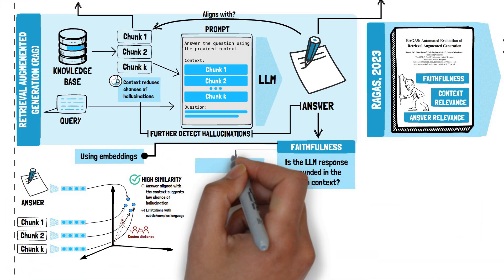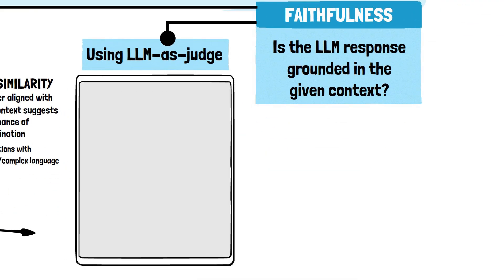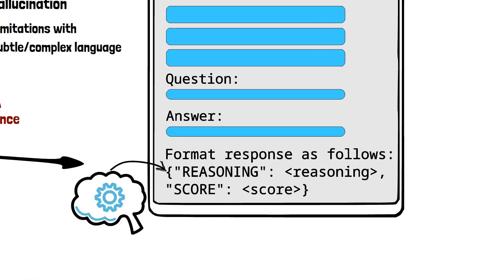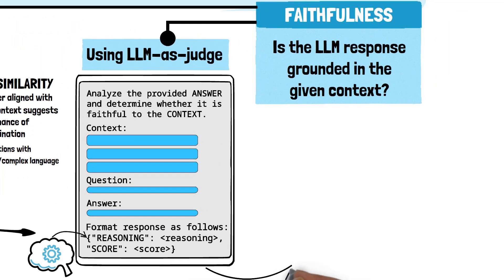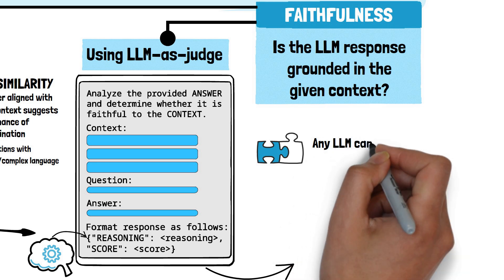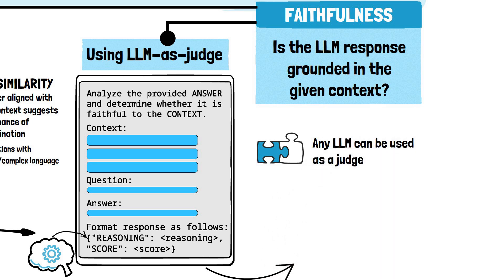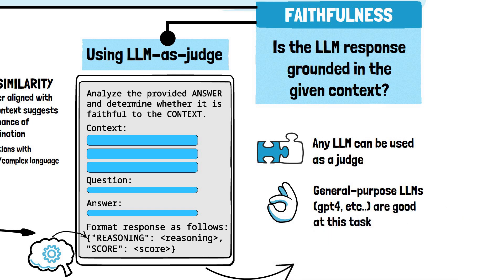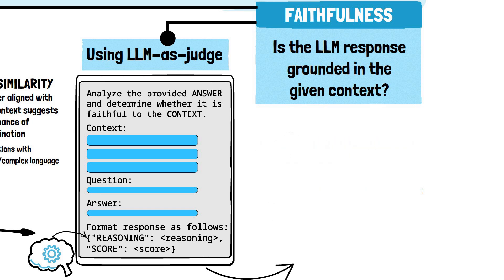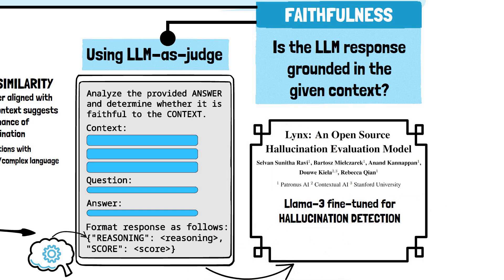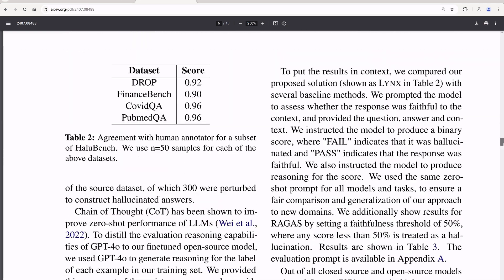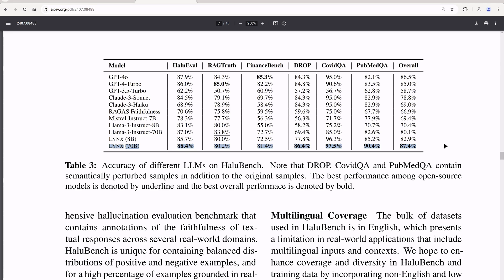A more commonly used tool is an LLM as a judge. In this approach, you prompt an LLM to score an answer's faithfulness to the provided context. It is common to prompt the LLM to generate reasoning in natural language for the score it gives. You don't have to use the same LLM that generated the answer — any general purpose LLM such as GPT-4 can be used as a judge. Large general purpose LLMs perform reasonably well as judges, but you could also use a dedicated model like LINX, which has been fine-tuned for hallucination detection. LINX is designed to perform well in challenging domains like medicine and finance where hallucinations can be harder to spot. According to benchmarks, LINX outperforms general purpose models like GPT-4 in these specialized tasks, making it a strong tool for hallucination detection.